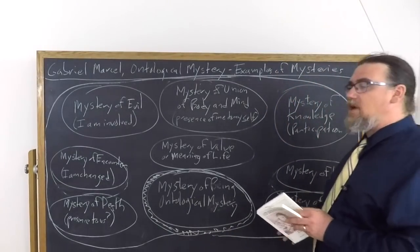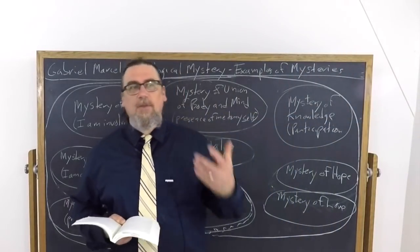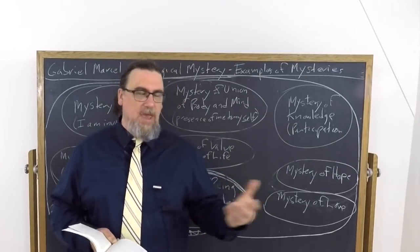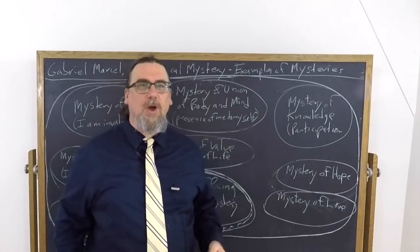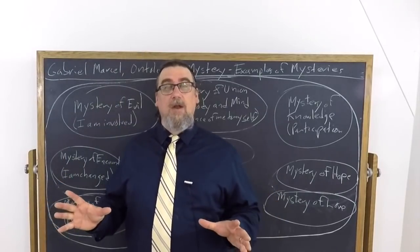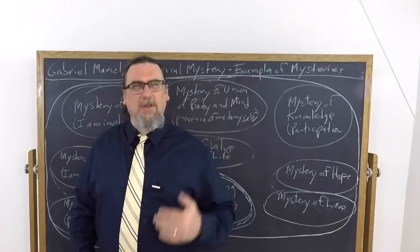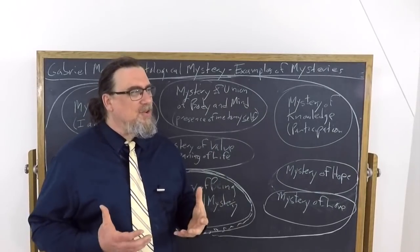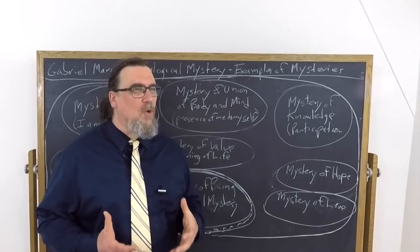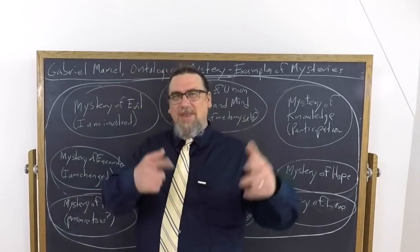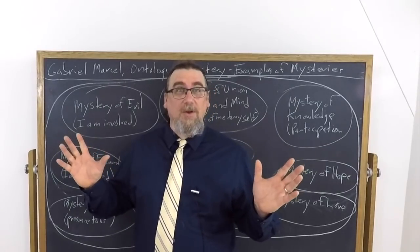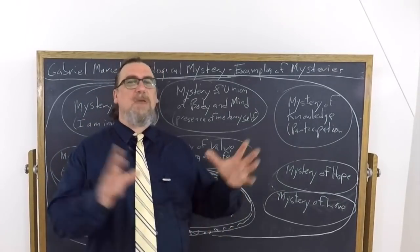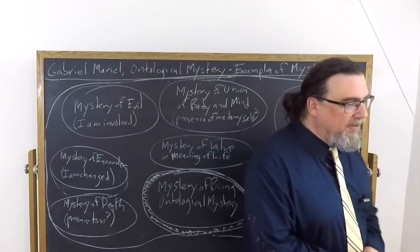So one that he talks about early on is the mystery of knowledge. He tells us that it's a mistake to take epistemology as first philosophy because knowledge itself is within being. So it's not as if knowledge yields us what could be being, which is a very common tendency in modern philosophy and even in some earlier philosophy as well, but particularly in modern philosophy. And we can substitute for that language if we want as well.